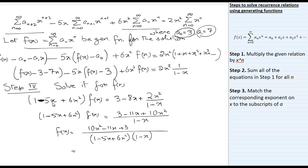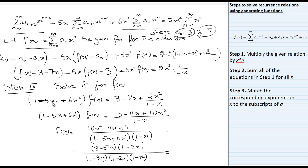Upon factorizing the numerator, we get (3 − 5x)(1 − 2x) divided by (1 − 3x)(1 − 2x)(1 − x). After cancellation of the common factor (1 − 2x), we get f(x) = (3 − 5x) / [(1 − 3x)(1 − x)]. This is our function f(x).